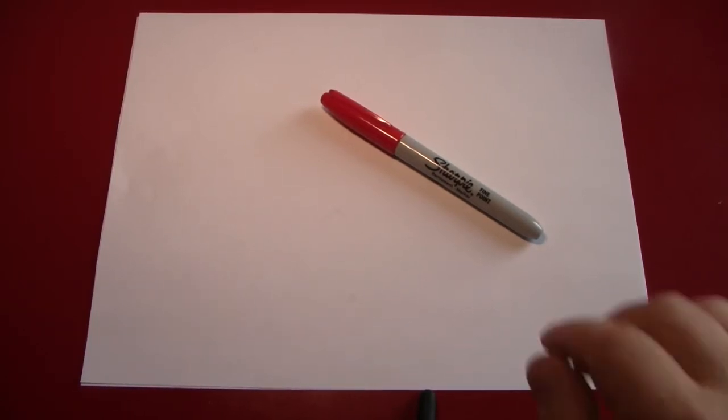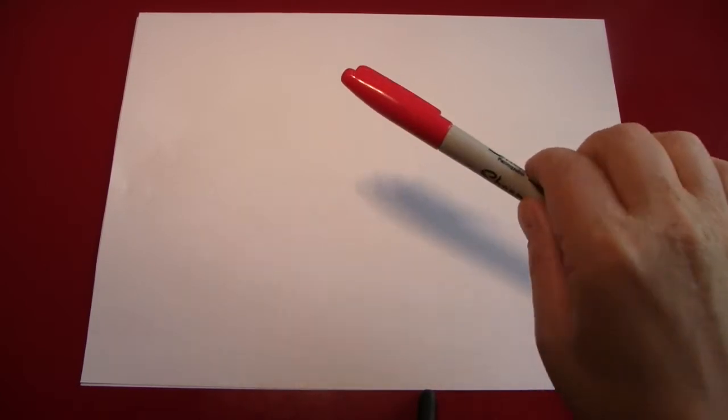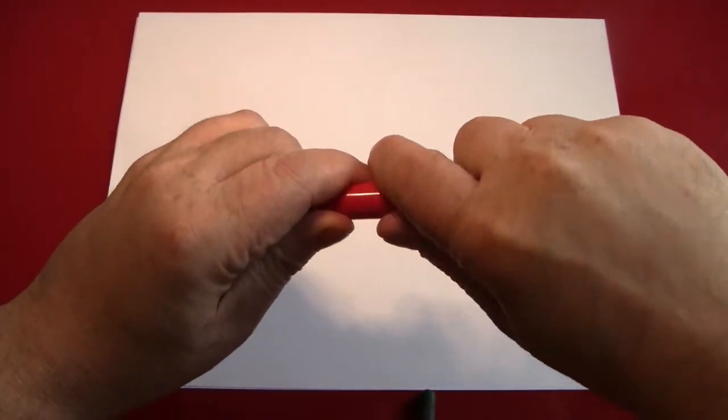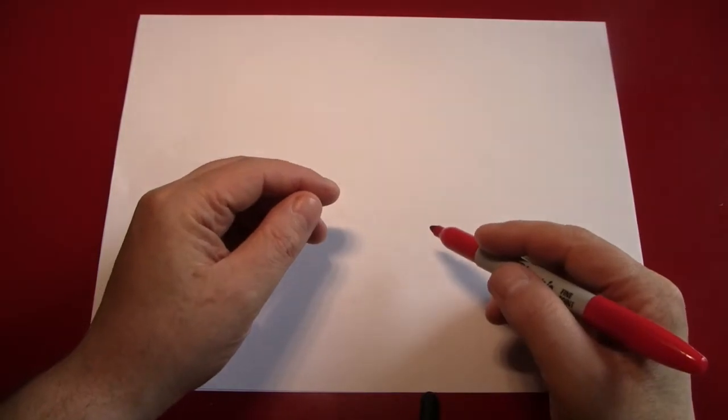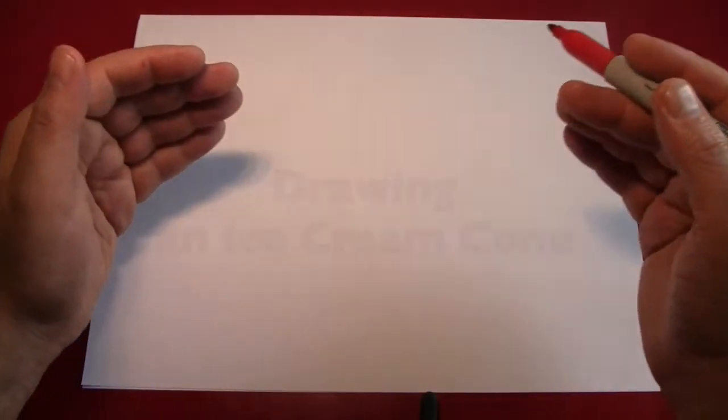Hello again everybody. It's the Reverend Jay Goldstein and welcome to another episode of Doodling with Reverend Jay. In today's episode we're going to be drawing an ice cream cone.